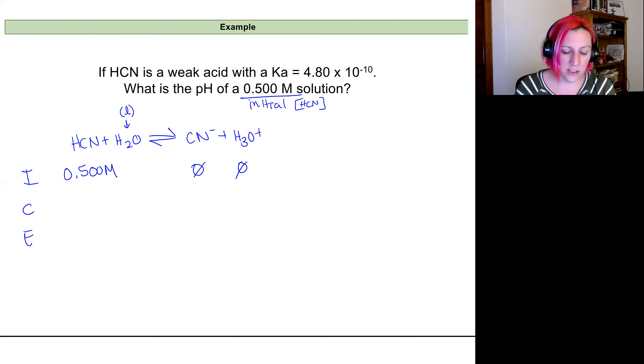So that means that I know to reach equilibrium, I'm going to need to form products, right? So everything will move towards the product side to reach that equilibrium phase. And that's because my Q value here is really equal to 0 times 0 divided by 0.5, which equals 0. And so that Q is less than our K value. Therefore, it's going to proceed to form more products.